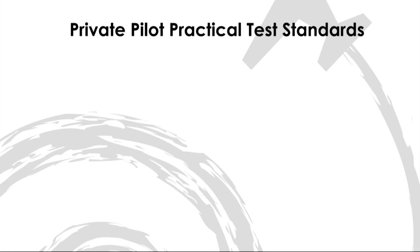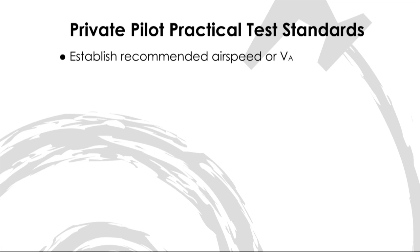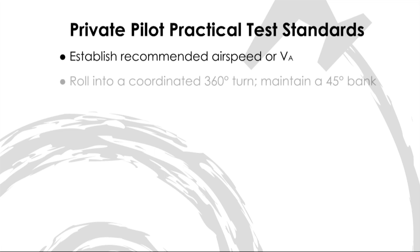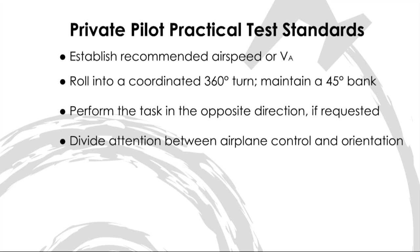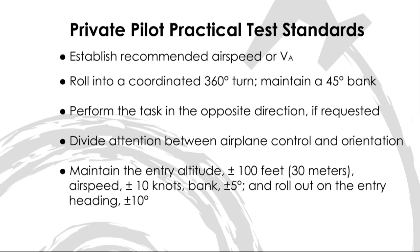Some of the most important PTS standards for the steep turn are: establish the manufacturer's recommended airspeed, or if one is not stated, a safe airspeed not to exceed VA; roll into a coordinated 360 degree turn maintaining a 45 degree bank; perform the task in the opposite direction if specified by the examiner; divide attention between airplane control and orientation; and maintain the entry altitude plus or minus 100 feet, airspeed plus or minus 10 knots, bank plus or minus 5 degrees, and roll out on the entry heading plus or minus 10 degrees.